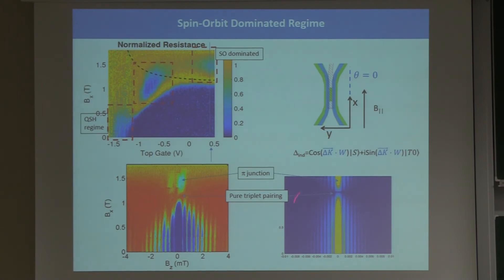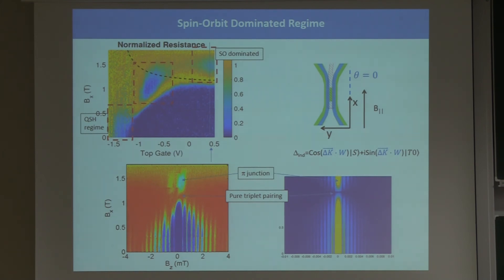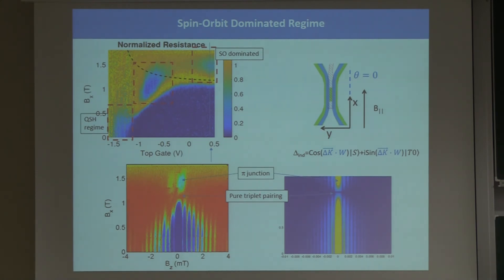One can simulate the critical current in this SNS device and find that it vanishes when Δk·W = π/2, when the cosine vanishes, and then reappears. Two important things about this disappearance and reappearance: first, why does the supercurrent disappear when the singlet part vanishes? We have a singlet superconductor (aluminum) on each side separated by the semiconductor. As the pair is injected and propagates, it starts as a singlet but changes its nature — from singlet to triplet and back. At Δk·W = π/2, the singlet component vanishes, meaning pairs arriving at the other superconductor are purely triplets. They can't enter the aluminum, which wants singlets, and therefore the critical current vanishes. This is the condition of pure triplet pairing in this device.